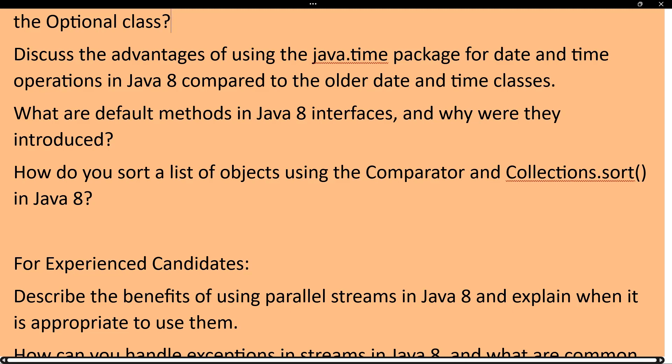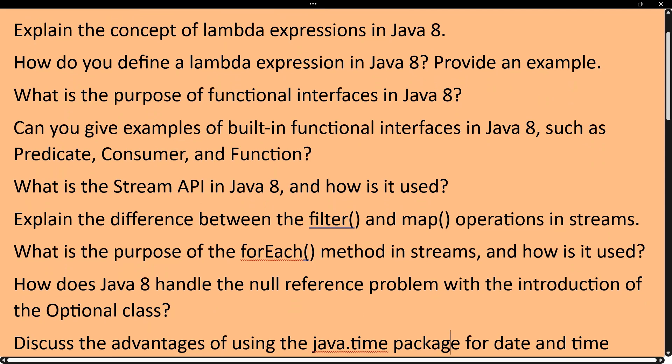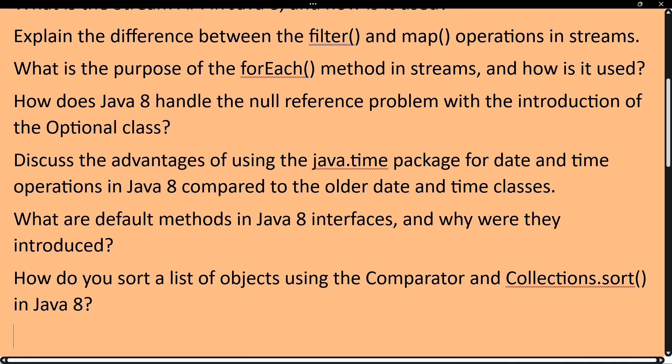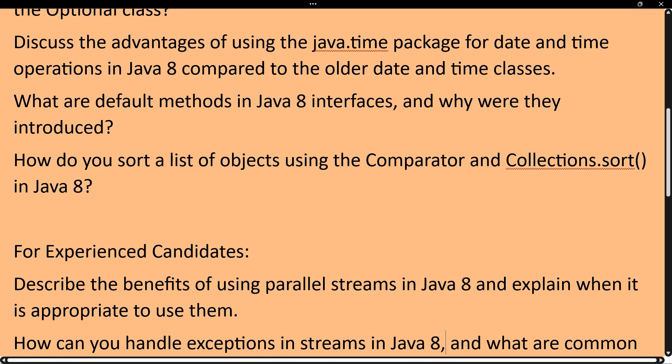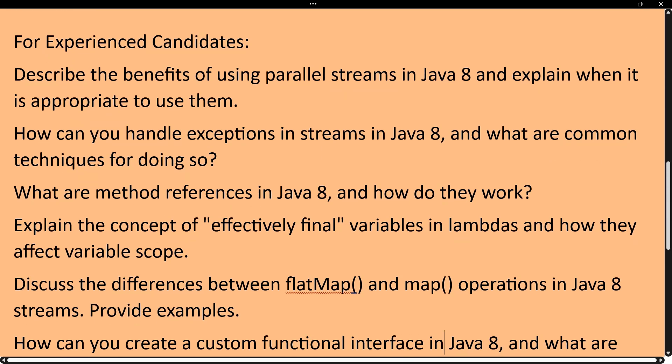The next question is: what is a default method in Java 8, and why and where was it introduced? The next question is: how do you sort a list of objects using Comparator and Collections.sort in Java 8? These are the questions collected for the fresher level — basically: have you used Java 8, what are the features, how do lambda expressions work, what is a functional interface, what are Stream API methods, what is the DateTime API, Optional, default methods, and how to use comparator and collections sort?